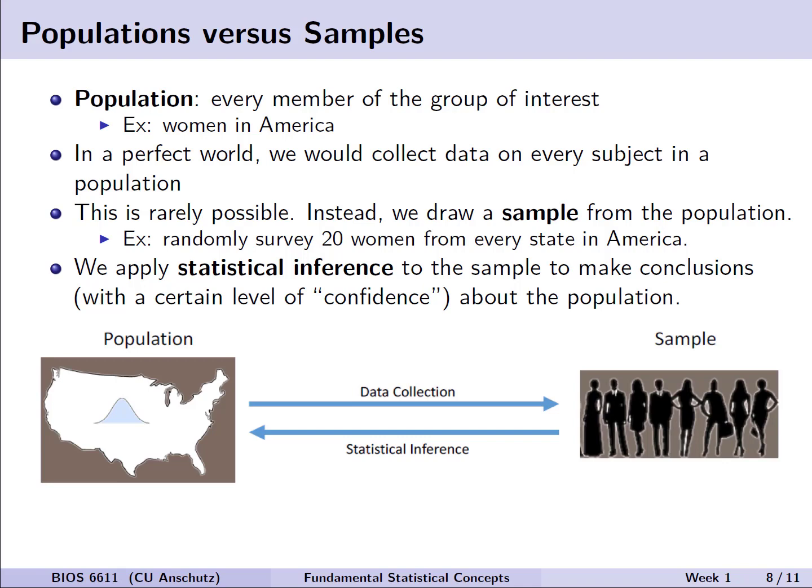And this sample helps us to draw conclusions with some level of confidence that we'll talk about more this semester in the population. But what we can see is that we really have this feedback cycle where we start with our population of interest over here. We then will collect data to get that sample of interest, which we then turn around and use to do statistical inference and make conclusions about the population. We then repeat this cycle for different questions or to refine our estimates.